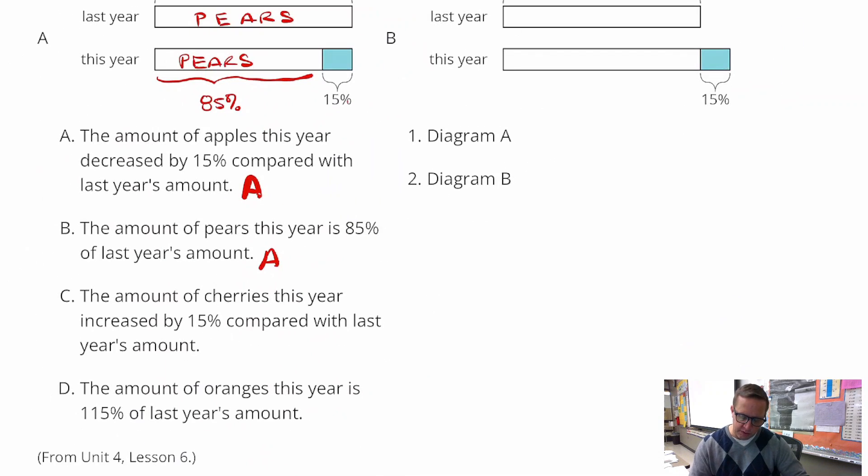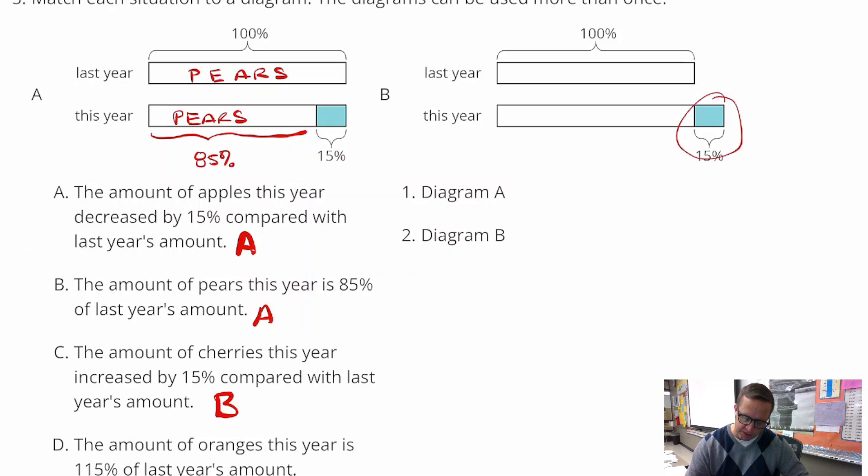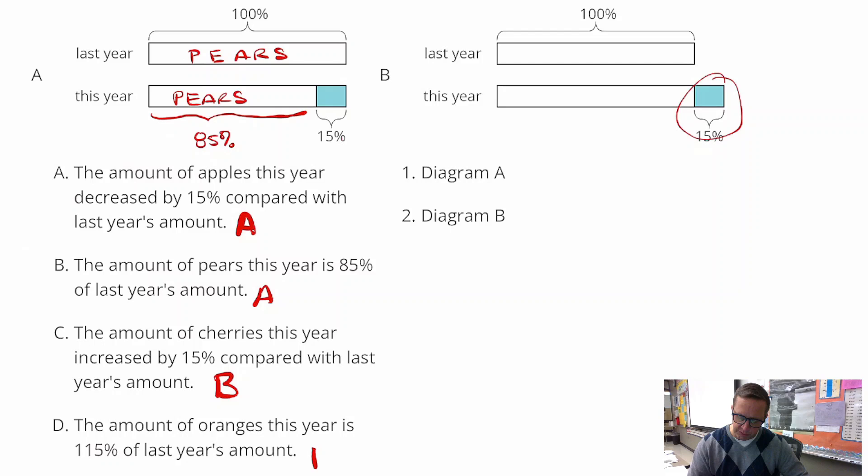The amount of cherries this year increased by 15%. Well, that's going to be B. That shows an increase of 15%. And D also shows an increase, so that's got to be B. That was easy.